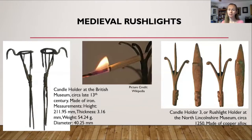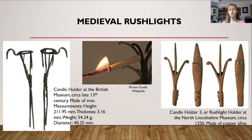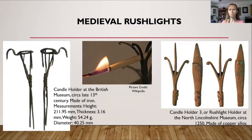There are a few examples of rush lights that remind me of a fork. The picture on the left is from the British Museum, from about the late 13th century, and it's made of iron. The picture on the right is from the North Lincolnshire Museum, from about 1250, and it's made of a copper alloy. The picture in the middle gives you an idea of how these holders would hold the rush light — you have your prongs and would just stick the rush light right in the middle. This seems to be a very rare concept as far as rush light holders that still exist in museums.